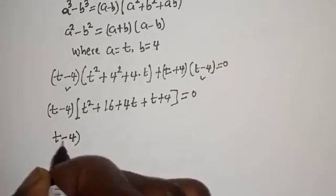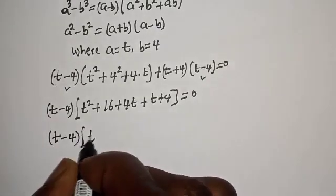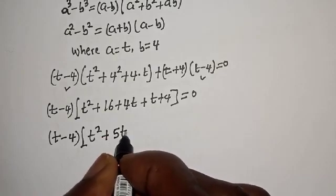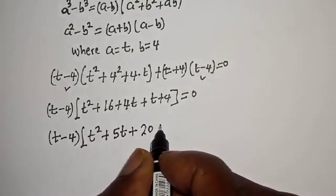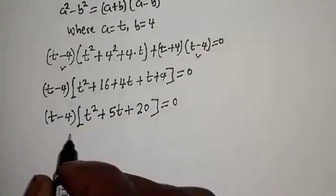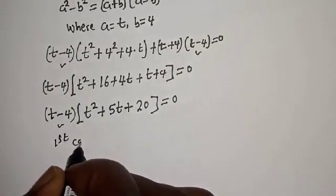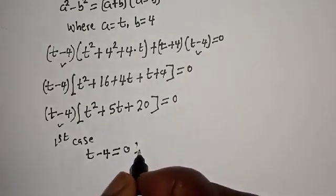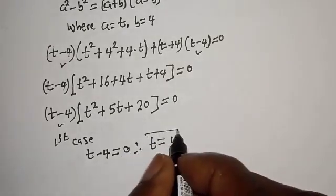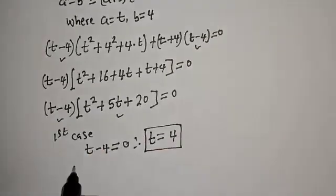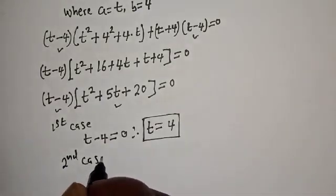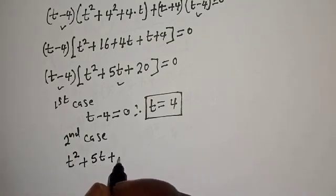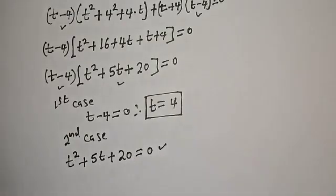Combining terms inside the bracket: t minus 4, multiplied by t squared plus 5t plus 20, equals zero. There are two cases. The first case: t minus 4 equals zero, therefore t equals 4.